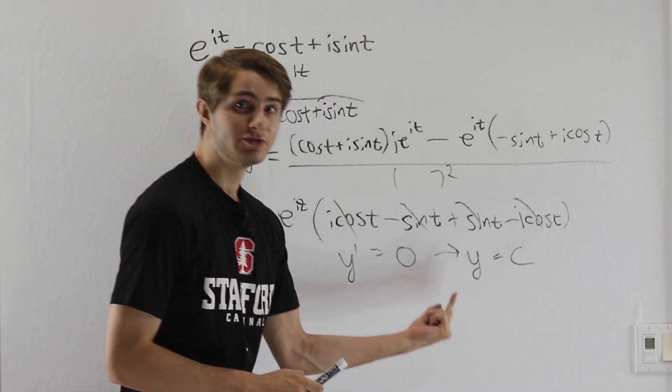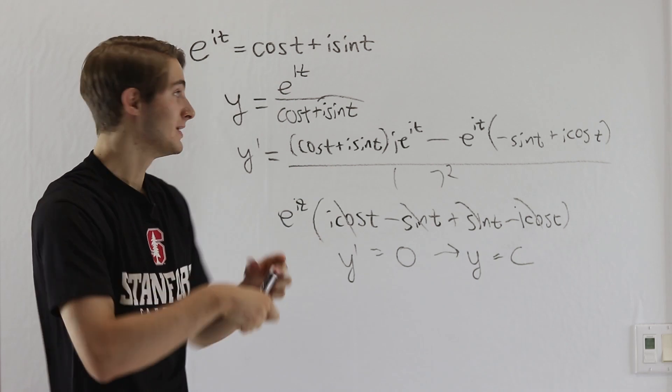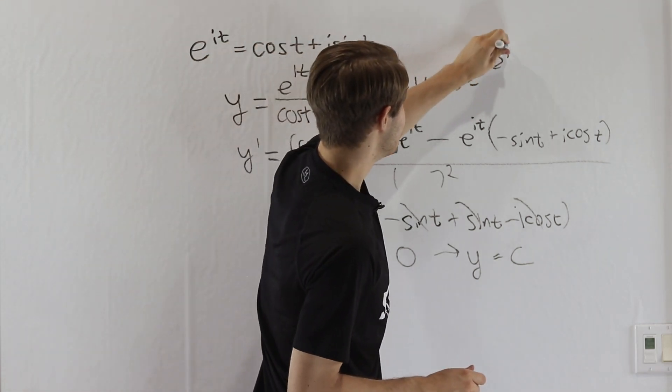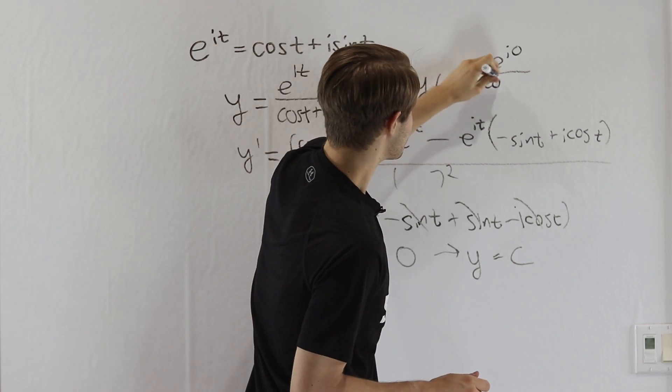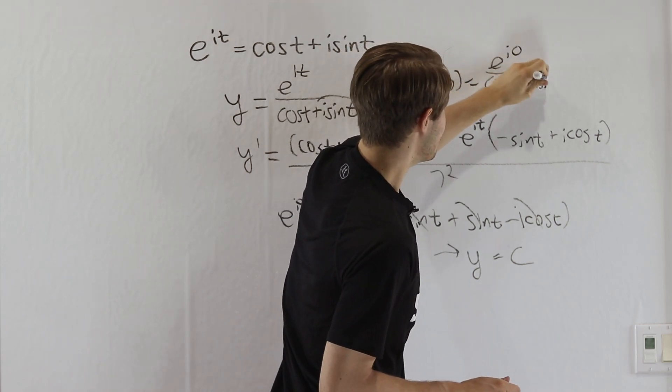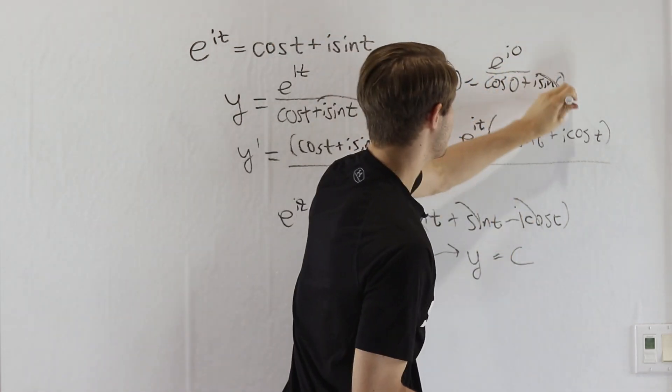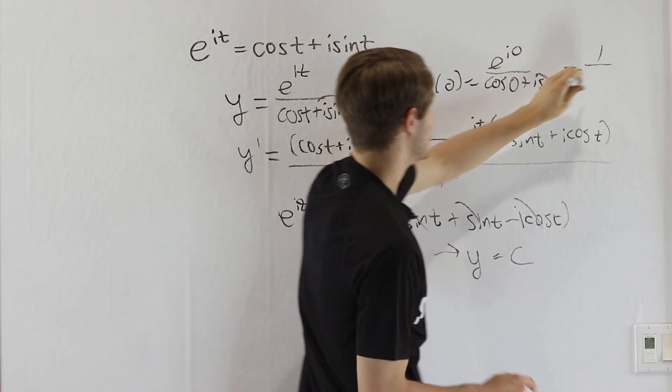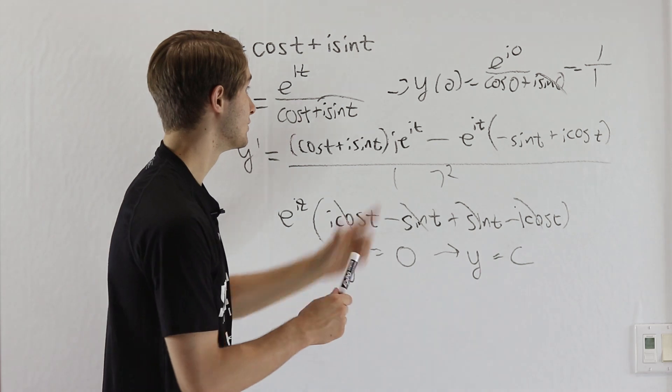All we have to do is find one particular value of y, and then we know the value is the same everywhere because it's constant. So if we think about y of 0, that's going to be e to the i times 0 over cosine 0 plus i sine 0. We know sine of 0 is 0, and then e to the i times 0 is e to the 0 is 1 over cosine 0 is also 1, which means that y of 0 is 1.